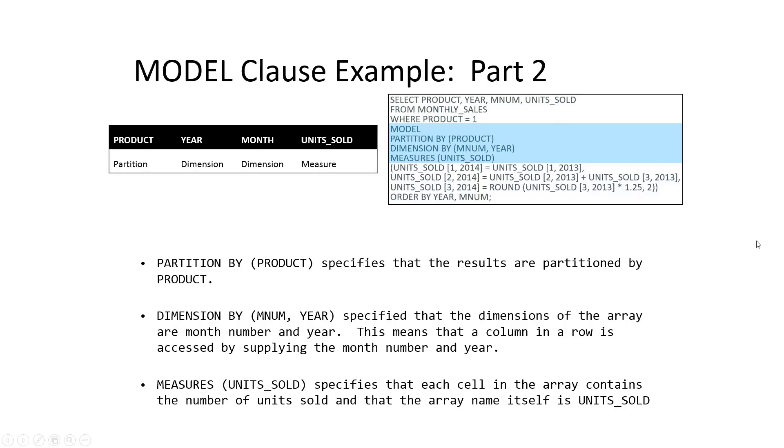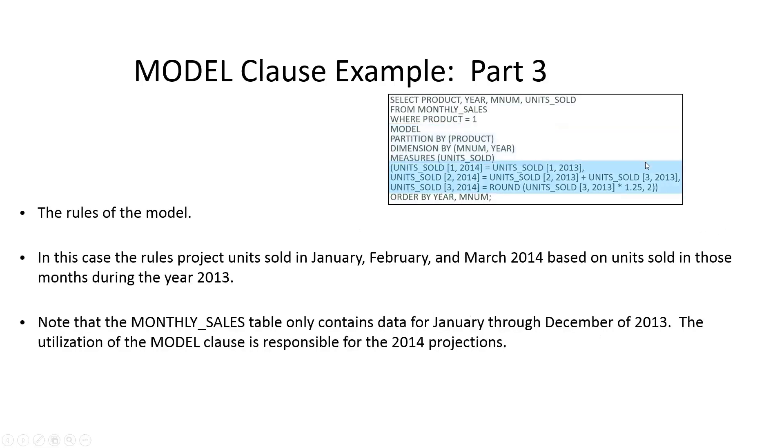And then in the third section of this is where we define the predictive rules. And in this case, this is just a vast dramatic oversimplification of what these types of predictive algorithm rules might be. But what we're saying here is that in January of 2014, we're going to predict our sales for January of 2014, based on the units sold in January of 2013. We're going to predict our units sold for February of 2014, based on the units sold in February 2013, plus the units sold in March of 2013.